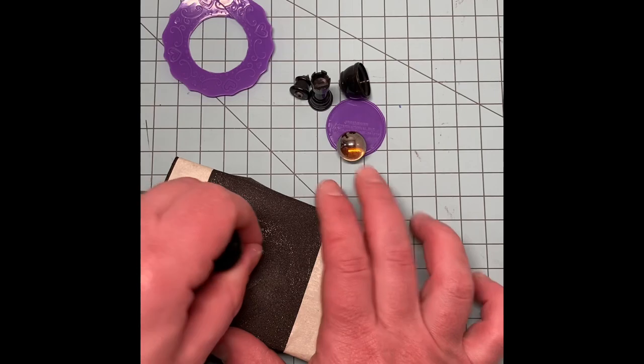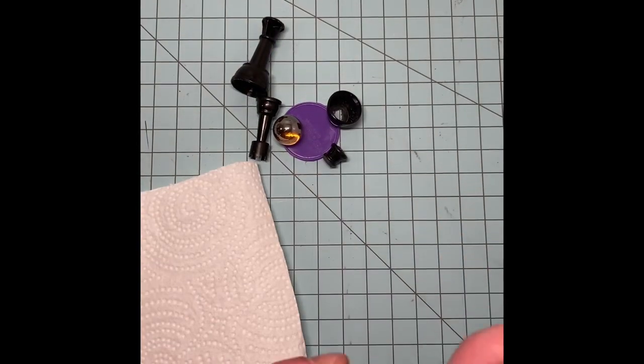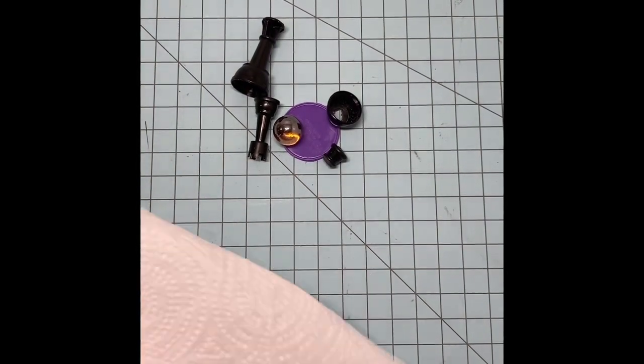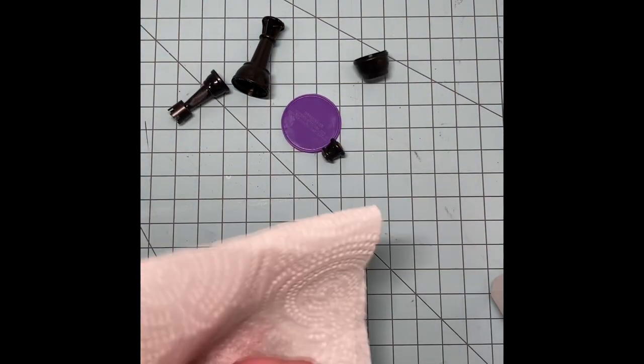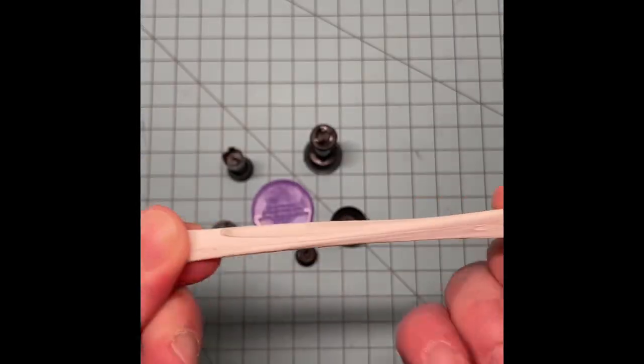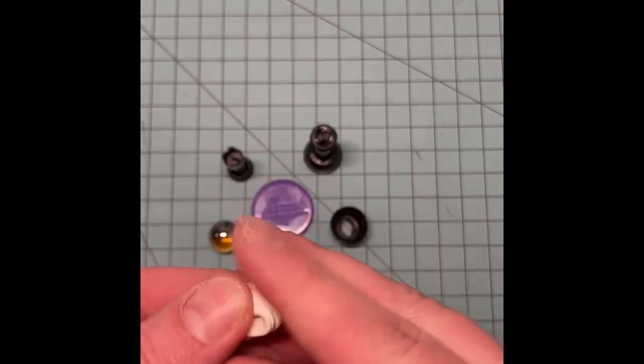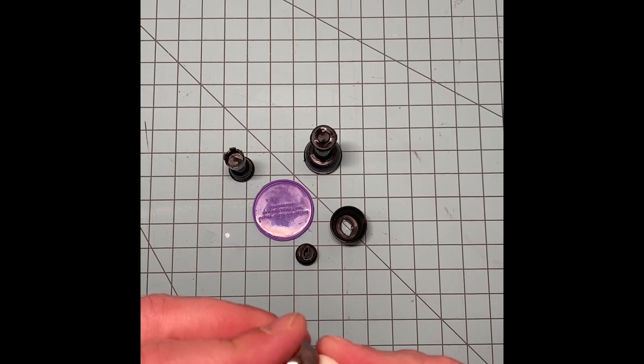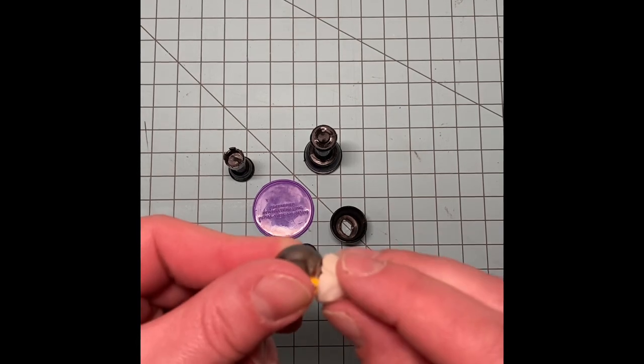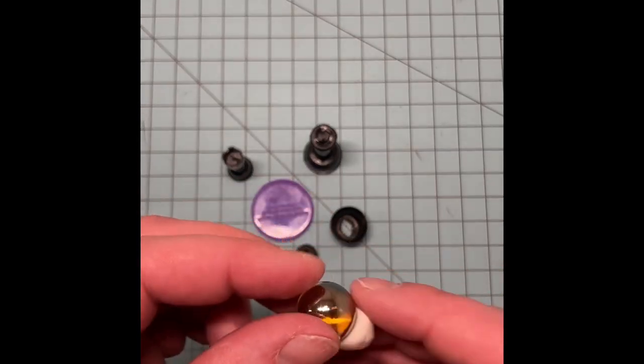Next, grab your sanding block, nail file, sandpaper, whatever your preferred method is, and sand all the pieces so that they're smooth and flat. After sanding, I used rubbing alcohol and wiped down all the pieces, including the marble, to remove any dust from sanding or fingerprints or oil or whatever may have accumulated on these little pieces while working with them.